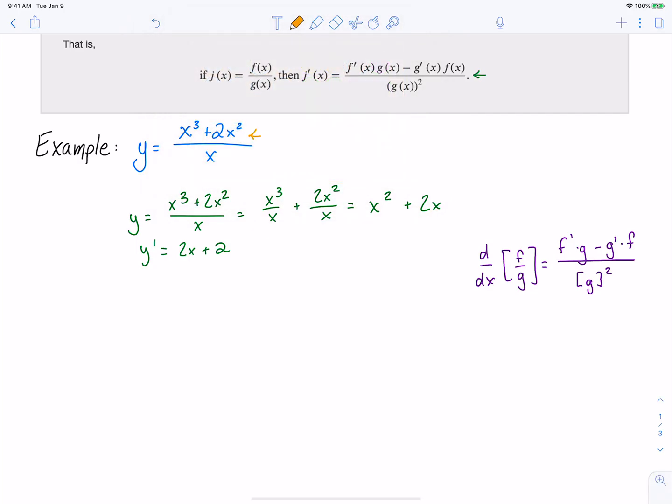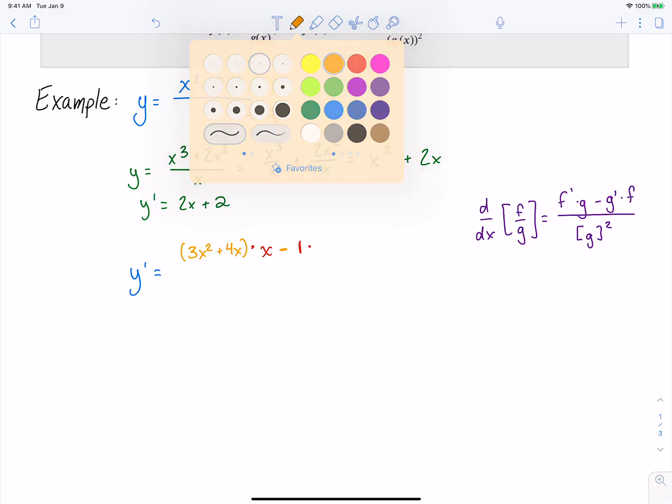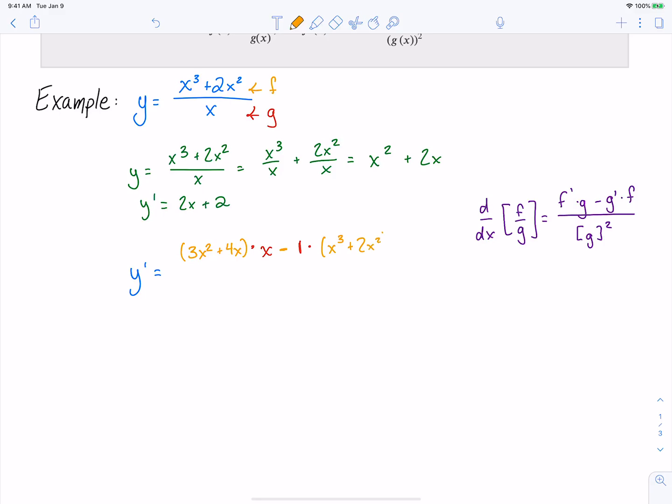So this one is actually pretty nice because it's pretty easy to tell which function is f and which function is g. The function that's on the top is f, the function that's on the bottom is our g. So our derivative in this case, if we're using the quotient rule, the derivative of the top would be 3x squared plus 4x, then times our function that's on the bottom, which in this case is just x, minus the derivative of the function on the bottom. That's going to be 1 in this case because our function on the bottom is x. And then times the function that's on the top. And then all of this is divided by that bottom function squared.